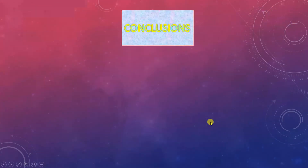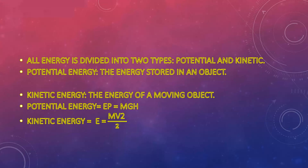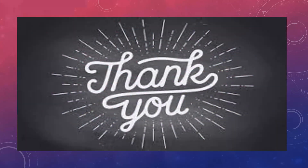To conclude: today we learned about two types of energy. All energy is either potential or kinetic. Potential energy is stored energy waiting for certain conditions to act, and kinetic energy is the energy of a moving object. The formula for potential energy is mgh — where g is the small g, acceleration due to gravity. The formula for kinetic energy is ½mv². Please revise these topics and try to solve the back exercises related to this topic. Thank you.